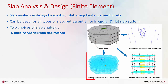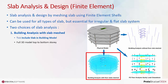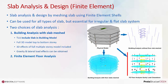There are two choices of slab analysis. Building analysis with slab meshed includes the slab and building model, assuming a full 3D analytical model from top to bottom story. Hence the inherent 3D effect of multiple stories is included, and both gravity and lateral load effects can be obtained. The other option is finite element floor analysis, which considers a subframe of one story only.